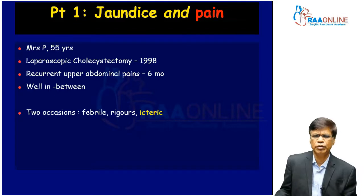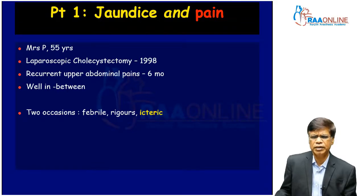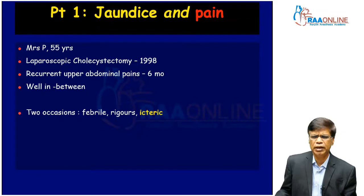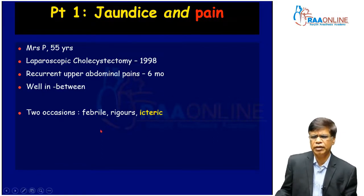Our first patient is a 55-year-old lady who underwent a laparoscopic cholecystectomy many years ago. For the last six months she has presented to various institutions with recurrent upper abdominal pains of a few days duration, being completely well in between. On two occasions she had fever, rigors, and was found to be jaundiced.